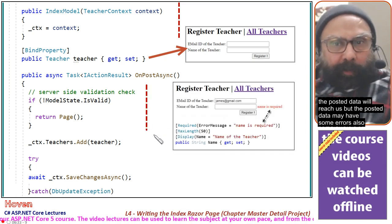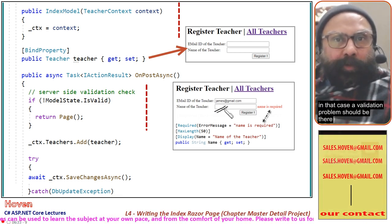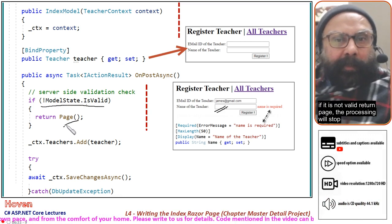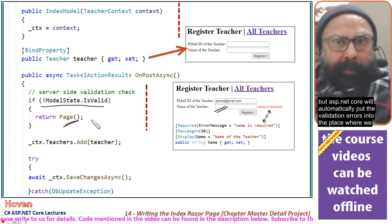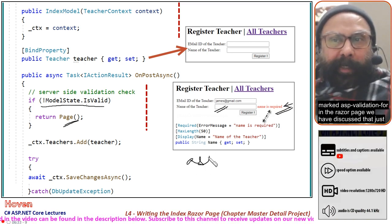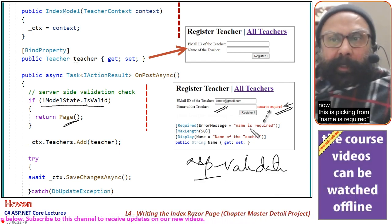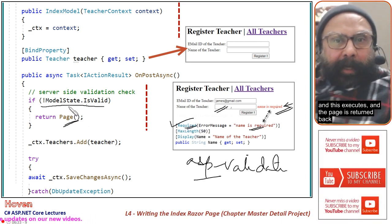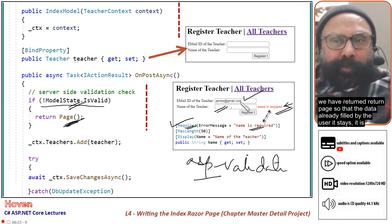OnPostAsync is the method that will be called when the Register button is clicked and the posted data reaches us. The posted data may have errors — for example, if a user has left a field blank, a validation problem should occur. So we check: if ModelState is not valid, we return the page. Processing stops, no database entries occur, and the form is sent back. ASP.NET Core will automatically put the validation errors into the asp-validation-for spans we marked in the razor page.